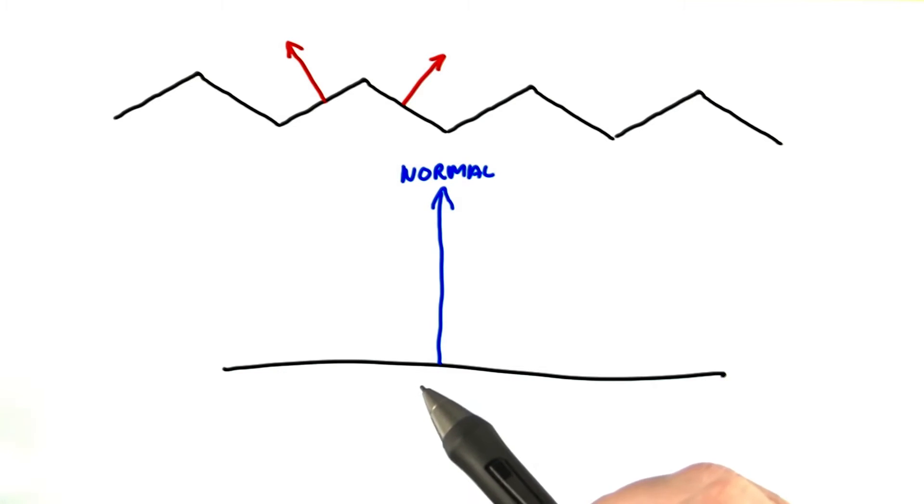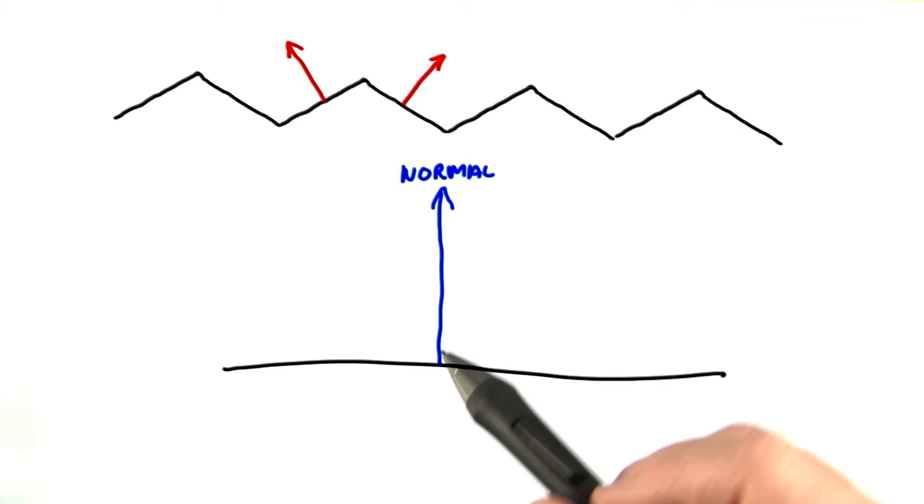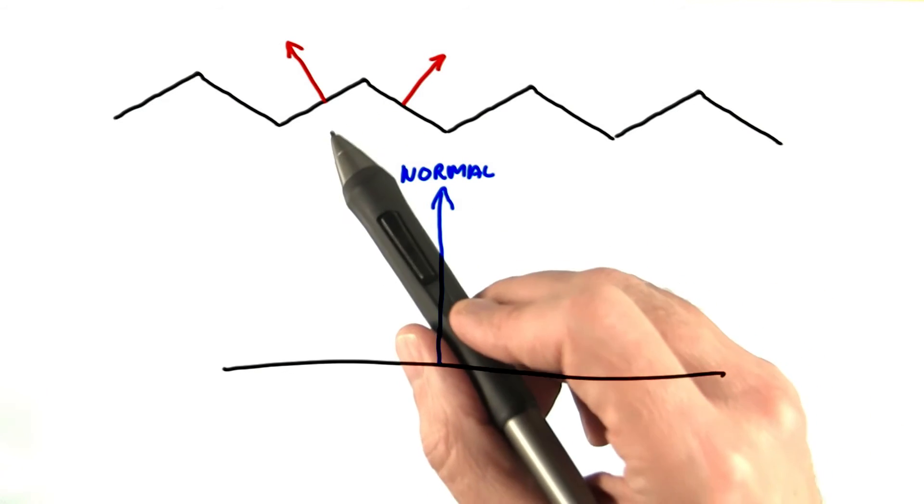In this exercise, you start off with our energy balanced Blin-Fong reflection model for a plane. What I want you to do is change the single normal to be two normals, as if the material has grooves in it.